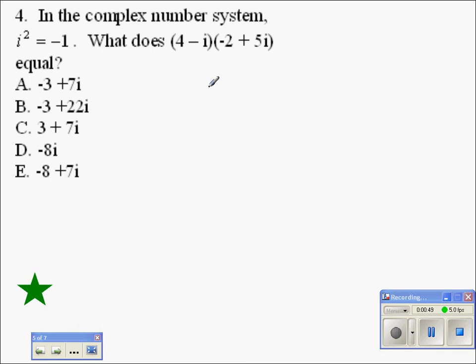4 times negative 2 is negative 8. That's the f in the foil process. First term times first term. Outside terms multiplied together would be 4 times 5i. 4 times 5 is 20. So 4 times 5i is 20i.